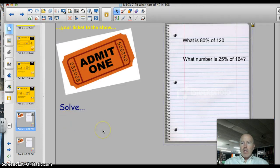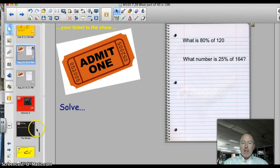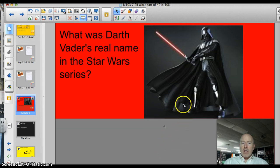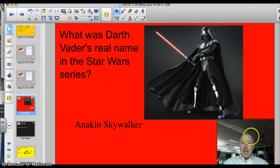Alright, here is your ticket for the night. What is 80% of 120? What number is 25% of 164? You meant to write those down? Alright, the answer to tonight's trivia question. What was the real name of Darth Vader in the Star Wars series? Yes, it was Anakin Skywalker. And here is his music to take us home. That's bad guy music, right? Alright, have a good evening. Thank you.